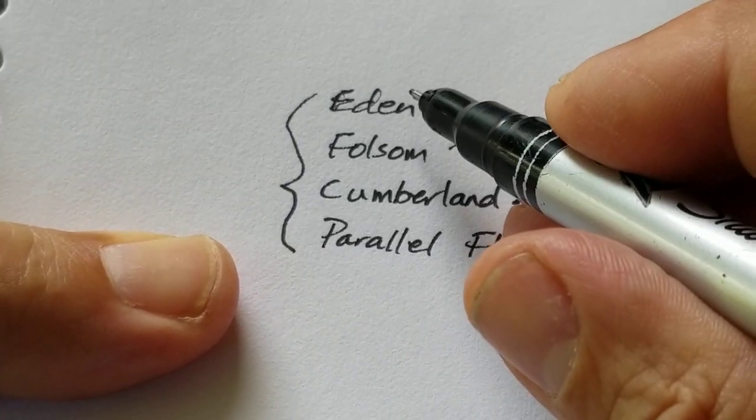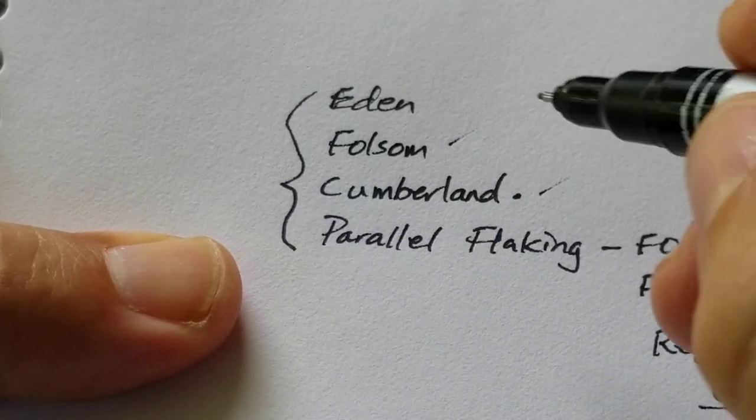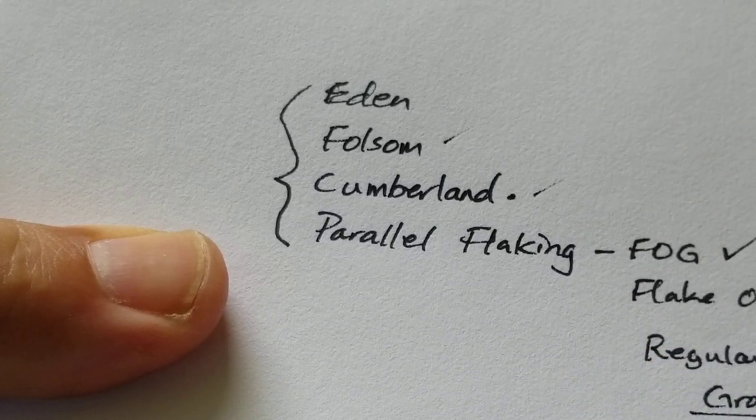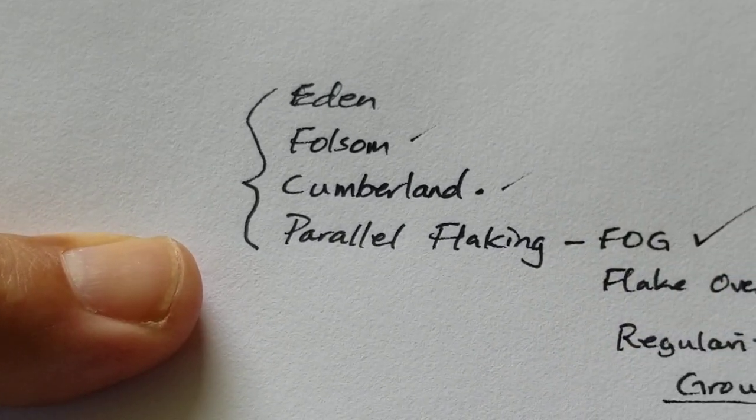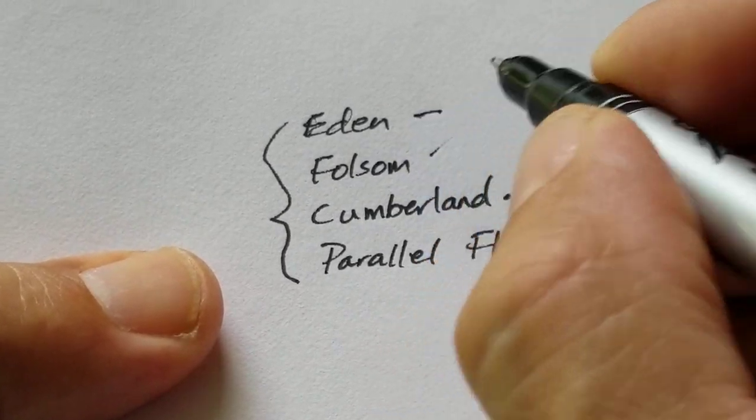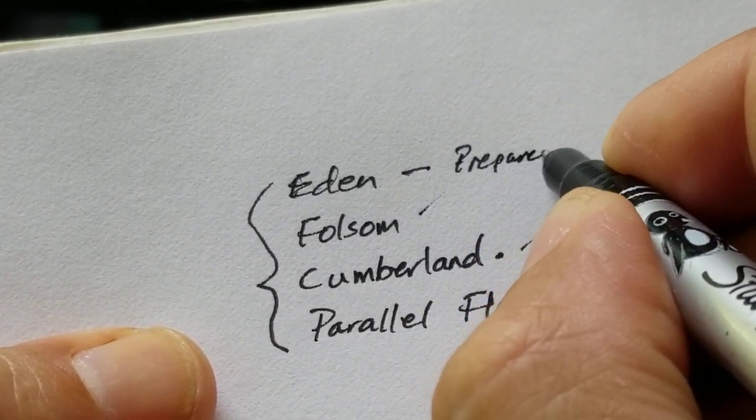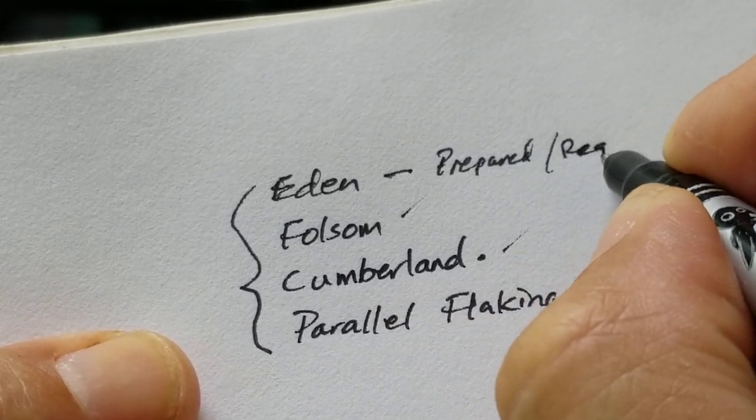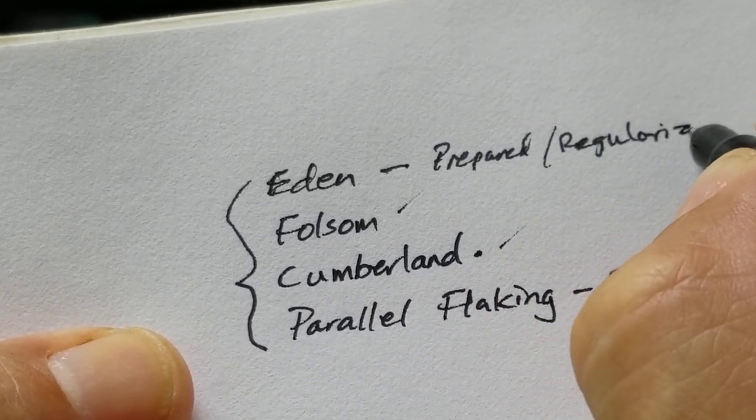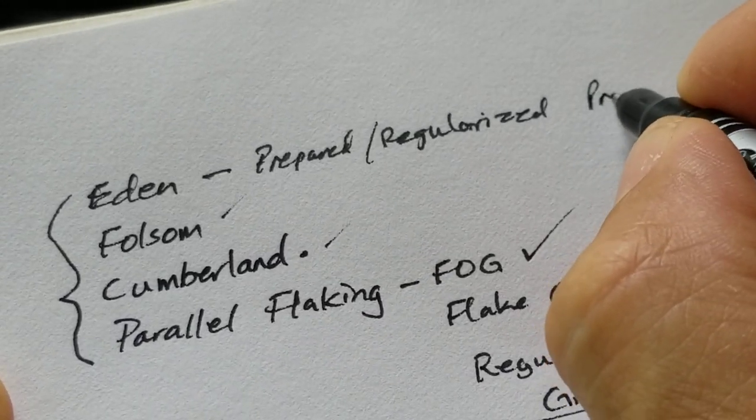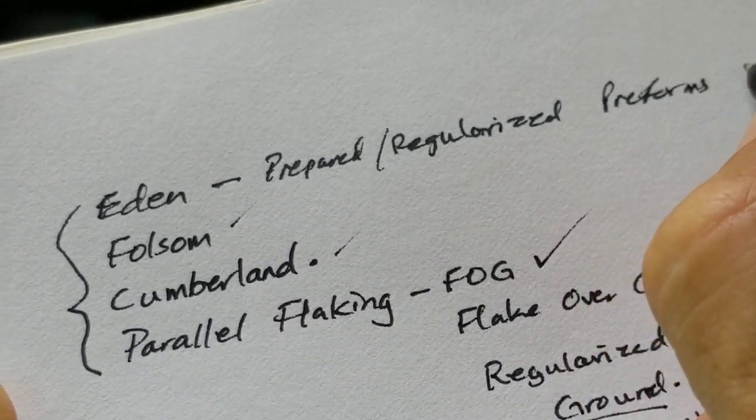Eden. Eden is closely related to parallel flaking. So Eden was also prepared with regularized preforms.